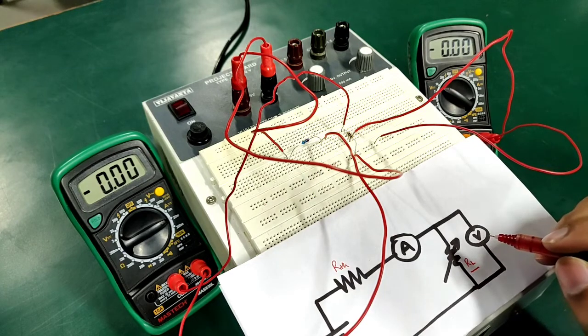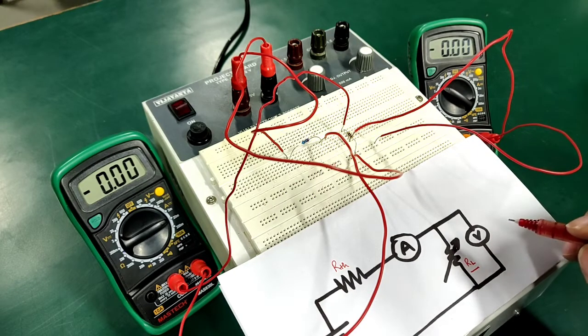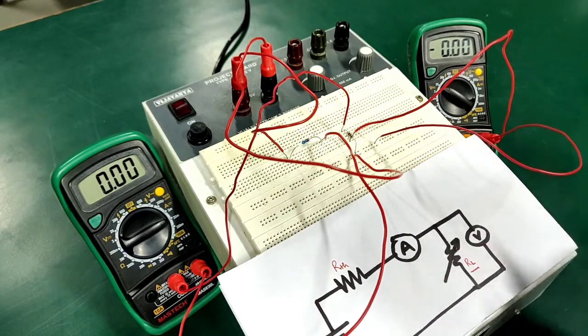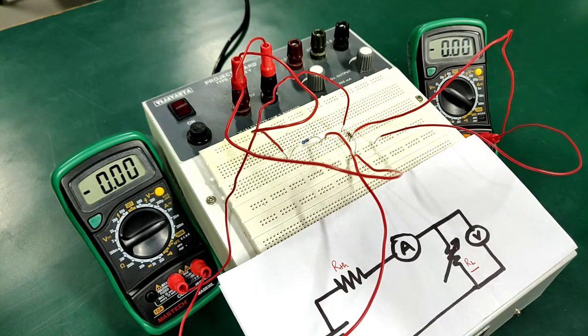So now the question arises, why do we need these two values, as to why do we need IL and VL? So that we can easily find out the power consumed by the load, which can be found out with the help of formula PL is equal to IL into VL.